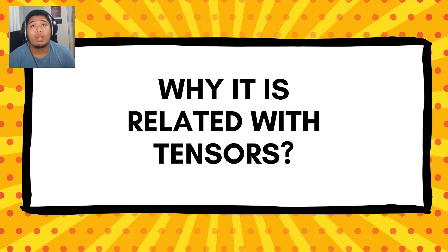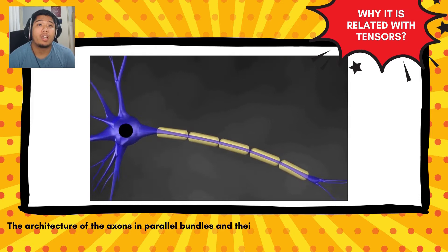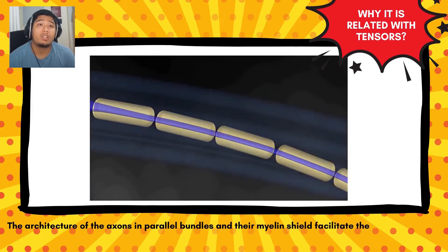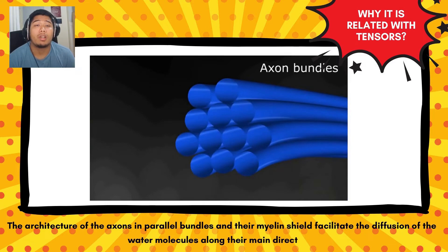All right, why is it related to tensors? The architecture of the axons in parallel bundles and their myelin sheath facilitate the diffusion of the water molecules along their main direction.